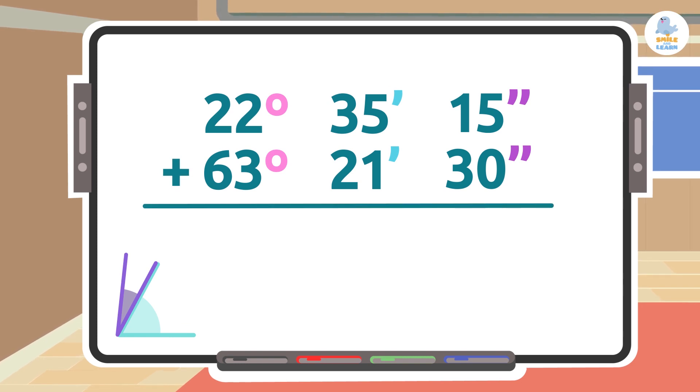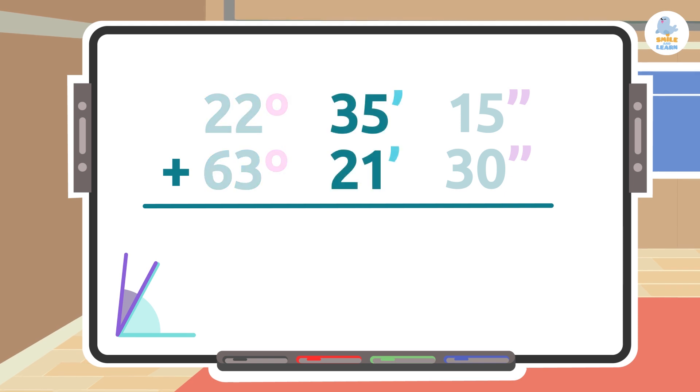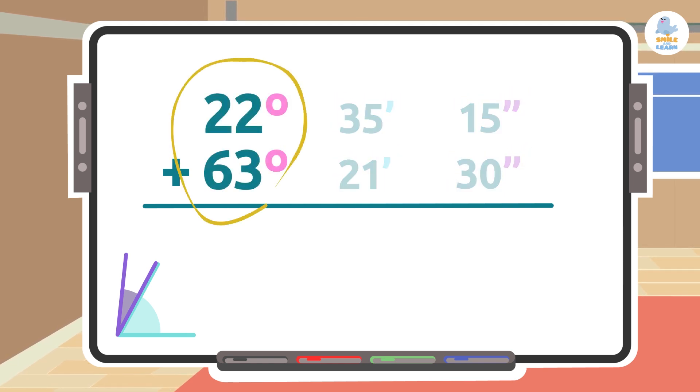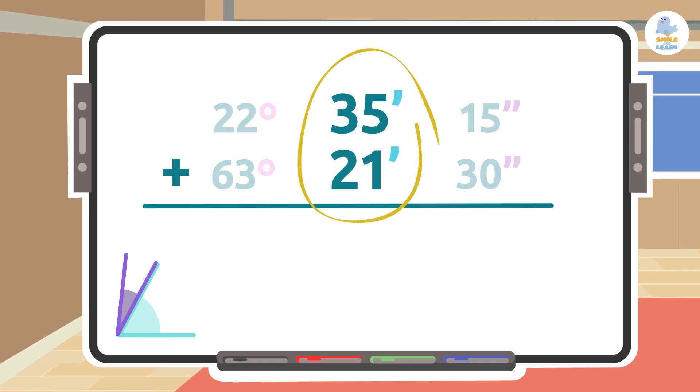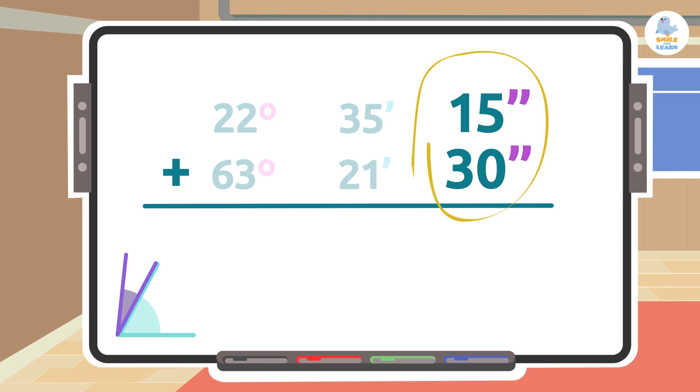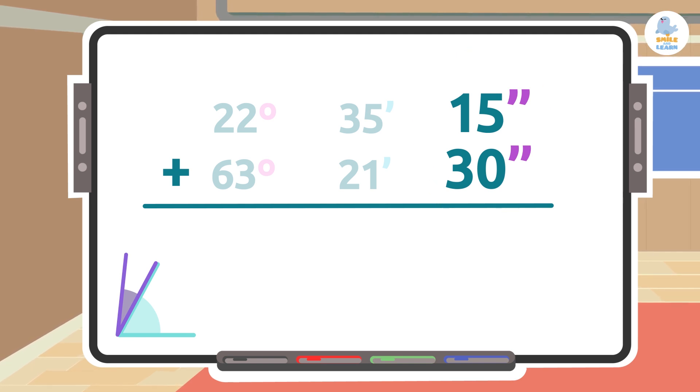Pay attention. The first step is to put the angle measurements we want to add one below the other, just like regular addition. But be careful, the numbers have to match exactly. That means degrees goes under degrees, minutes goes under minutes, and seconds goes under seconds.